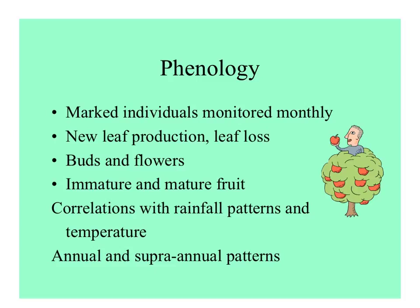Then there's phenology. People determine phenology for plants in a community by marking individuals and monitoring them throughout the months of the year, noting things of interest like new leaves produced, leaves falling off, buds and flowers present, and immature and mature fruit. By collecting these data for all of the plants in a community throughout the year, you can see if there are correlations with climate. Some tropical trees don't flower every year — some have supranennial patterns, flowering every five, seven, or eight years. In this case, they may exhibit massed fruiting.